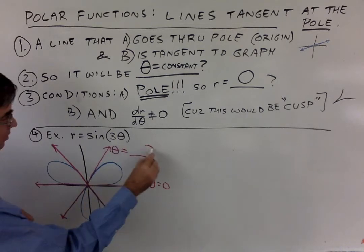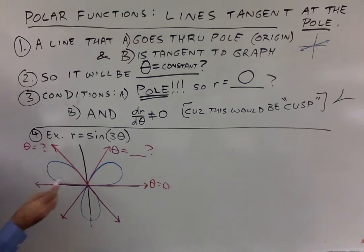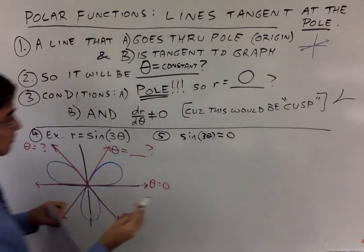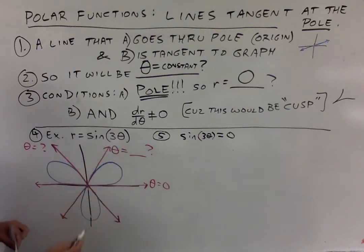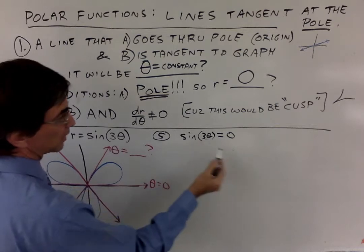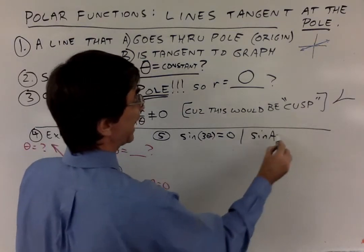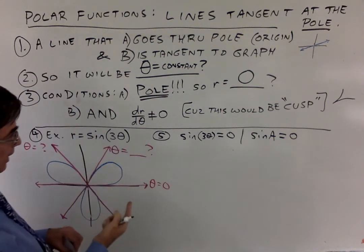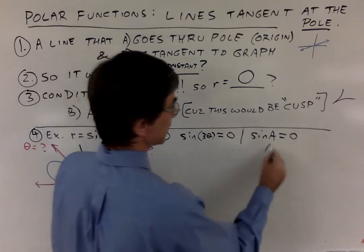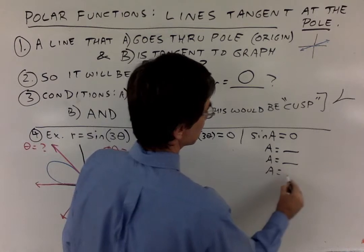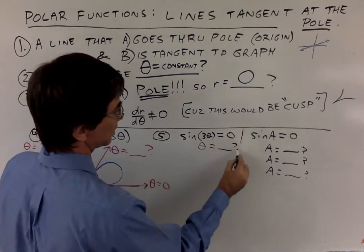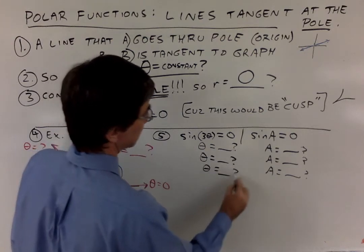So, theta equals what for these two remaining lines? Look at the condition: you set r equal to zero. Setting r equal to zero means sine of three theta equals zero, and then you solve for theta. Think of the inside as a variable — call it a. When does sine of a equal zero? We need three values, matching our three tangent lines from the graph. Sine equals zero when a equals zero, when a equals pi, and when a equals two pi.